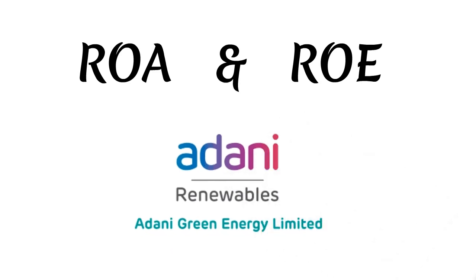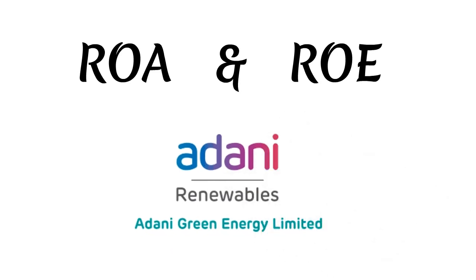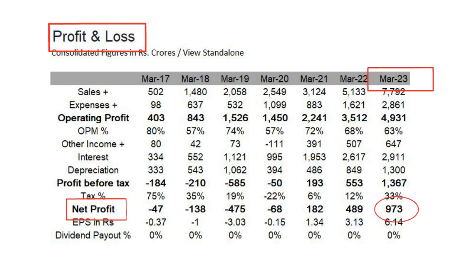To illustrate the application of ROE and ROA in evaluating a company's financial health, let's consider the example of Adani Green Energy. To calculate ROE, we need to first determine the net income for FY 2023, which can be obtained from the profit and loss statement. In this case, the net income amounts to 973 Crores.